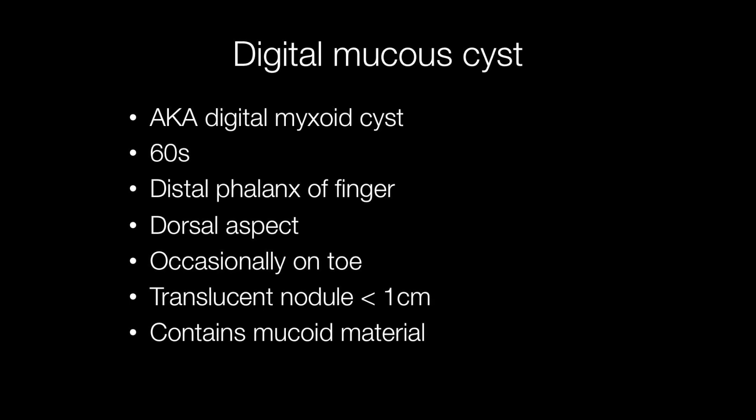Digital mucous cysts are benign. They tend to occur in people in their 60s and affect the ends of the fingers — the distal phalanx on the dorsal aspect, that is the back of the finger. The gross appearance is that of a translucent nodule usually less than 1cm across, and as the name indicates, the nodule contains mucus.